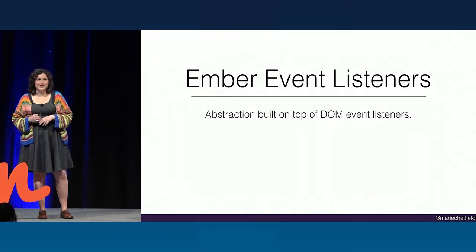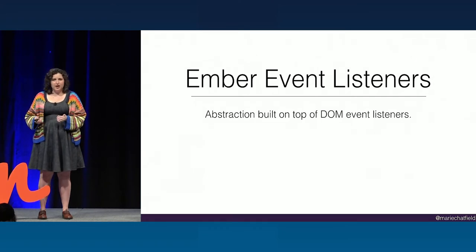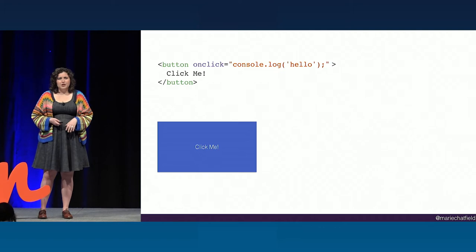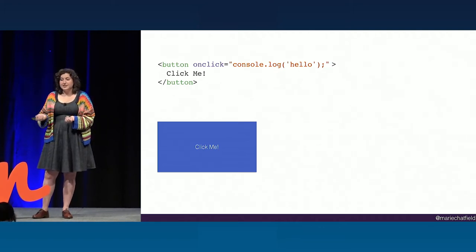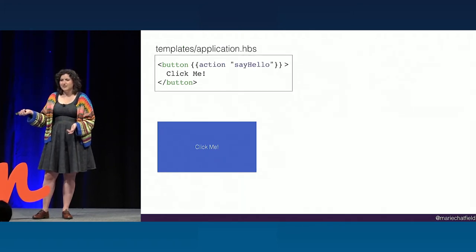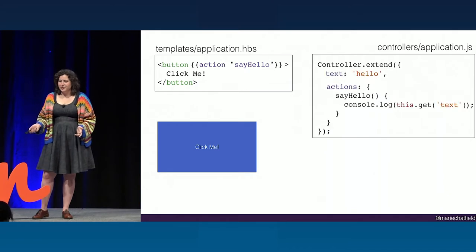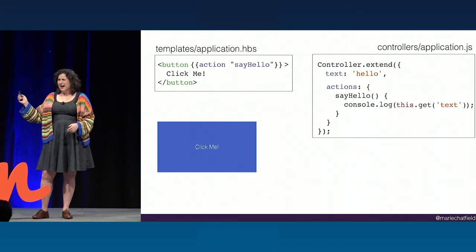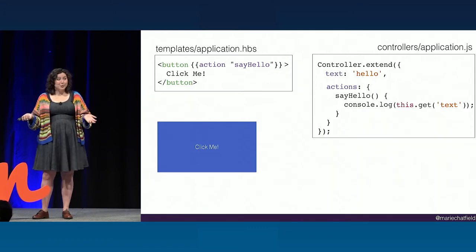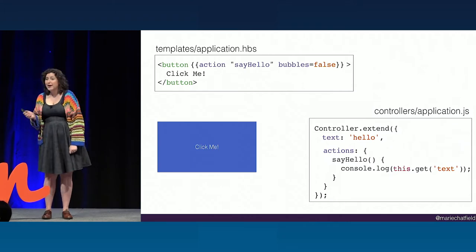All of that has been regular DOM event listeners, but what about Ember event listeners? This is an abstraction that Ember provides on top of DOM event listeners — it works well with how we expect Ember apps to go. We can make a regular DOM event listener into an Ember event listener by using the action template helper. In the corresponding component or controller, we define an action. Notice that we don't have access to the DOM event anymore, so how do we stop propagation? Ember provides abstractions for that too: we can say bubbles equals false, and that will stop propagation for us.